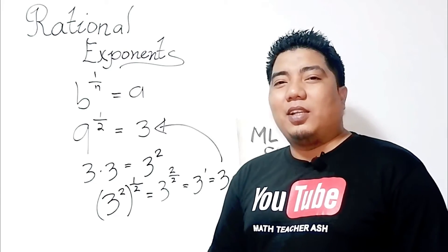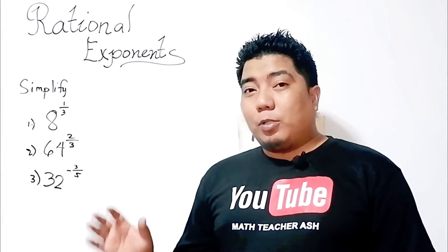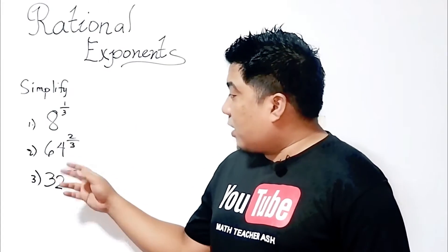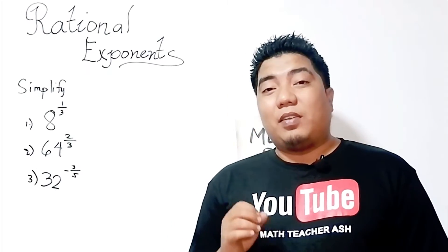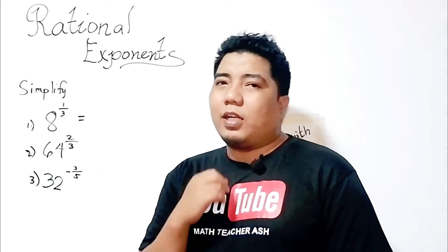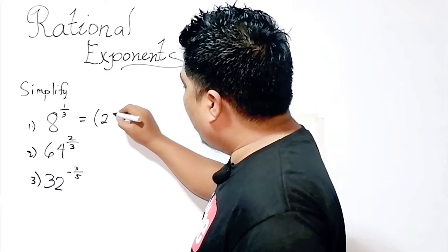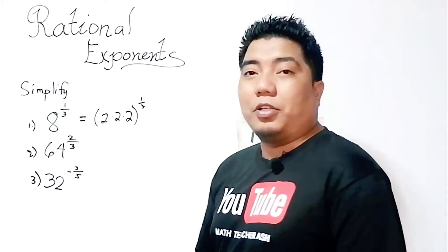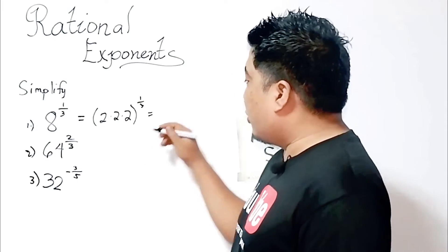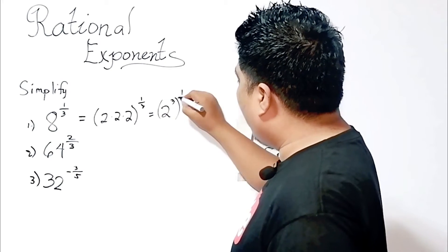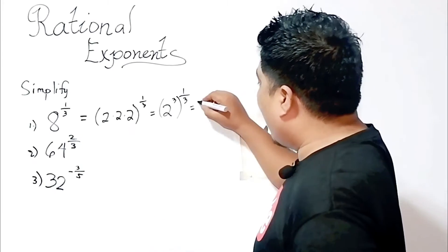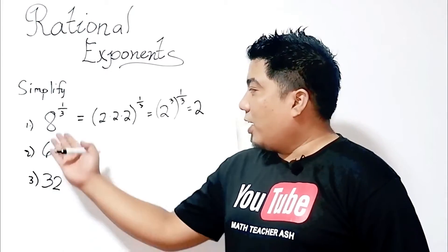Let's consider some examples. We have 8 to the power of 1 third, 64 to the power of 2 thirds, and 32 to the power of negative 3 over 5. For 8 to the power of 1 third, we use prime factorization: 8 is 2 times 2 times 2, so that's 2 cubed to the power of 1 third. Applying the power rule, 3 times 1 third gives 3 over 3, so your final answer is 2.